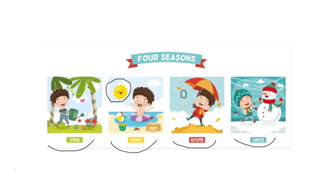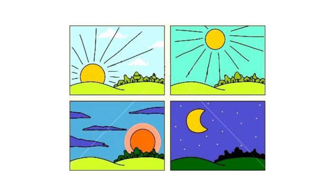So these are the four seasons: spring, summer, autumn, and winter. And now we will talk about the times of the day. We begin the day with the morning, where the sun rises up in the sky. When it is morning time, we wake up and get ready for school. Then it is the afternoon. What do we do in the afternoon? We go home from school and then we have our lunch with our families.